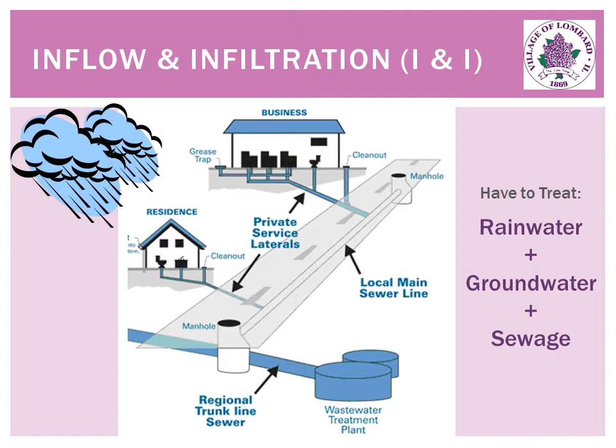This extra water does minimal damage to the structure; the concern is related to the operation of the sewer system. Rain and groundwater do not require treatment, but if they enter the sewer system, they go to the treatment plant along with the sewage. This excess volume is then treated the same as raw sewage. Repairs can prevent rainwater and groundwater from entering the system and thus reduce wastewater treatment costs.